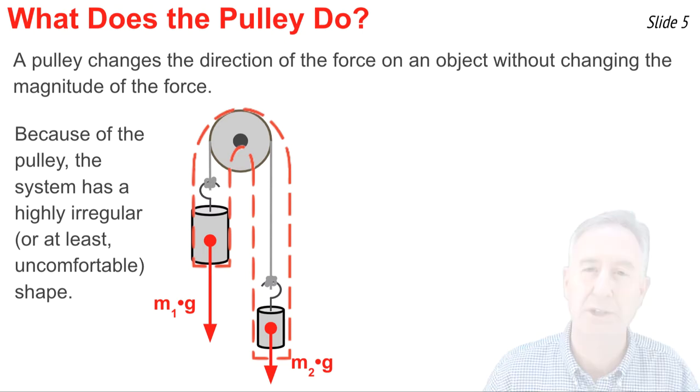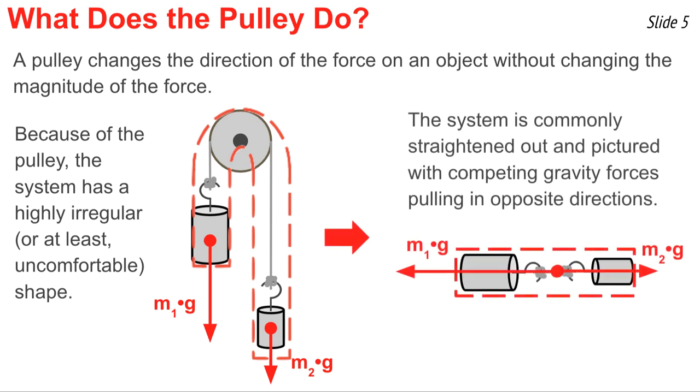It's often commonplace to rearrange the system so that it looks something like this, stretched out horizontally and straightened out such that there's two competing forces of gravity, one on the left side of the system and one on the right side of the system. In this case, the net force on the system is m1g minus m2g. I think we're now ready to start our example problem.